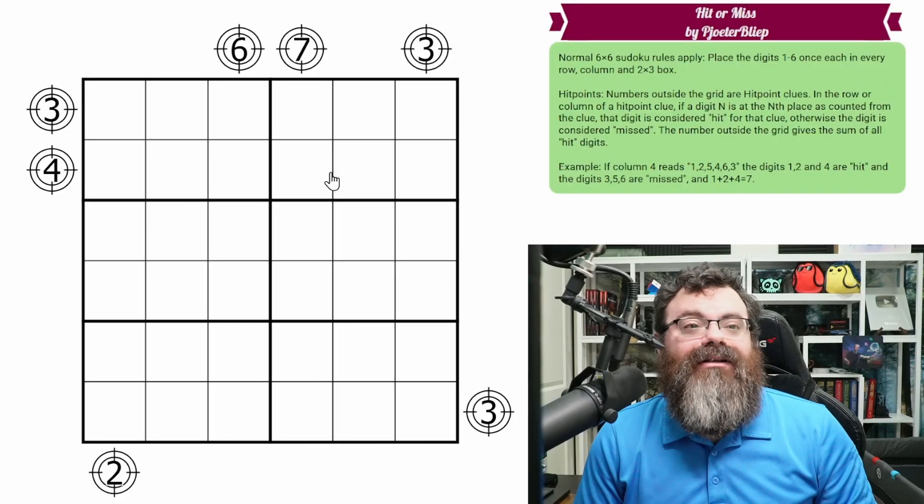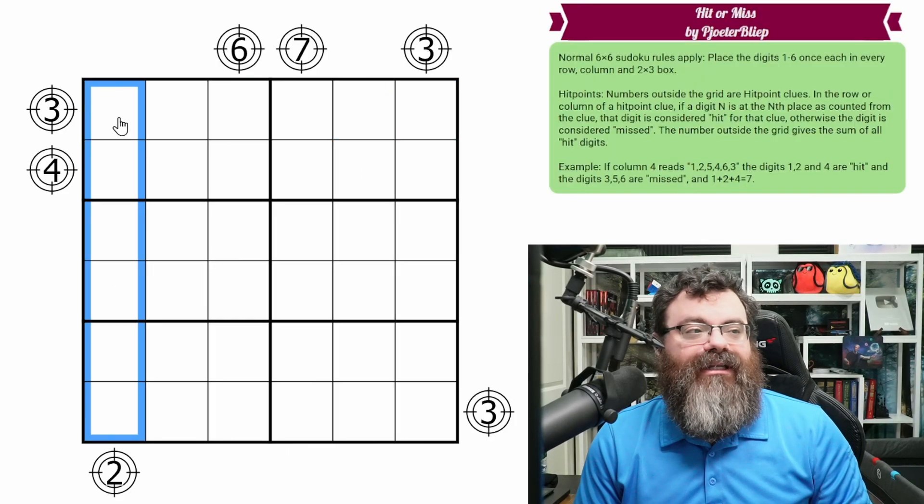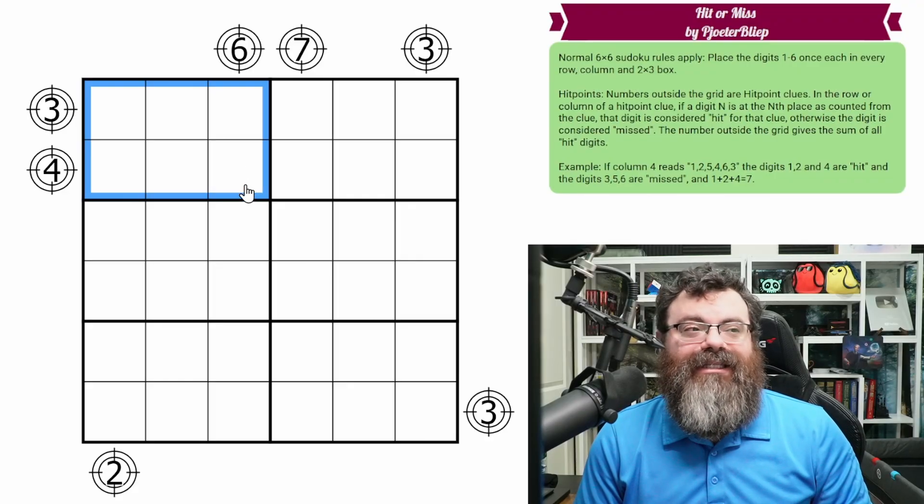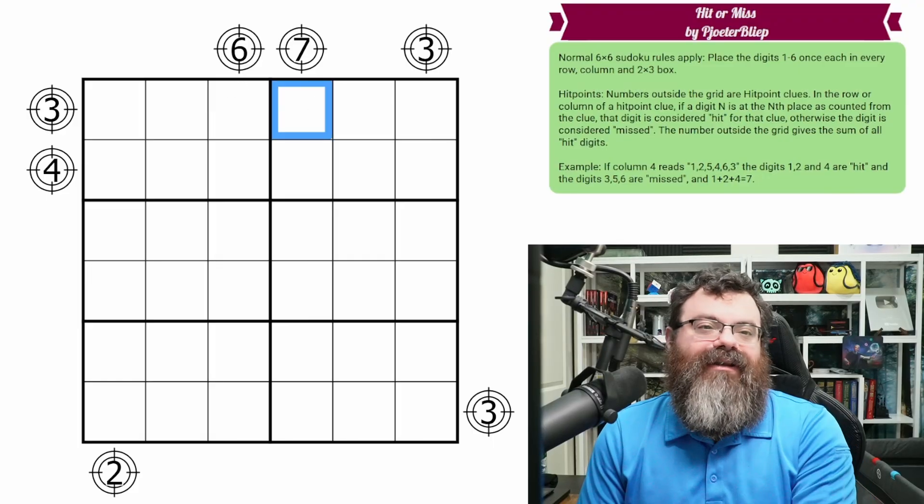We are doing hit points today. So we have normal six by six Sudoku rules, meaning in each row, each column, and each two by three box, we are placing the digits one to six exactly once each. We also have hit point clues outside the grid.